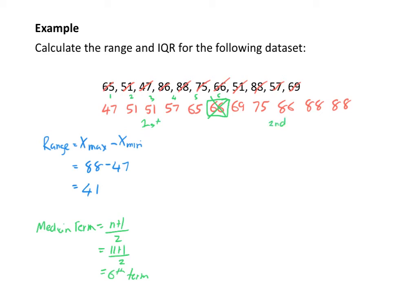Now that I've split my data set into 2, I want to find the quartile 1 and quartile 3 values by finding the middle number of both of those halves. My quartile term is going to be found using the same formula as the median: n plus 1 divided by 2. But this time I need to look at how many numbers are in the first half — there are 5. So 5 plus 1 divided by 2, meaning I'm looking for my 3rd term.